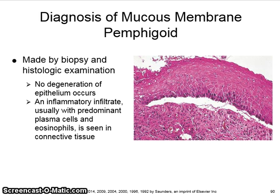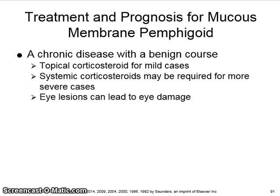Gingival lesions have been called desquamative gingivitis, but this may be seen with lichen planus and pemphigus as well. Diagnosis is made by biopsy and histologic examination. No degeneration of the epithelium occurs. You will see an inflammatory infiltrate, usually with predominant plasma cells and eosinophils in the connective tissue. Mucous membrane pemphigoid is a chronic disease with a benign course.